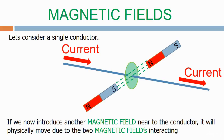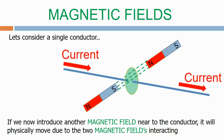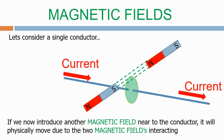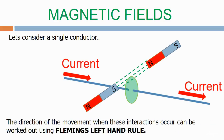So here we have a bar magnet creating a magnetic field. The conductor will then move. The direction of the movement when these interactions occur can be worked out using Fleming's left hand rule.